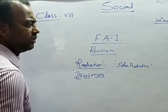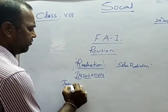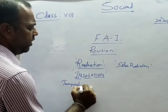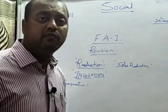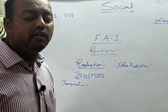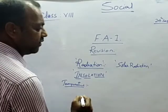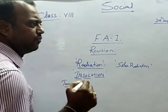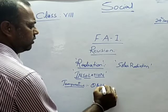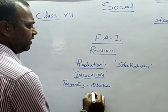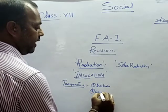After learning about insolation and radiation, we came to understand that temperature distribution is not uniform all over the world. There are reasons for the variation of temperature from place to place and region to region. To understand this distribution, we have taken four categories. The first one is latitude, which is a factor that influences temperature. The second one is water and land distribution.